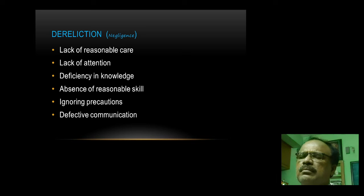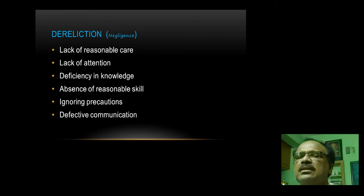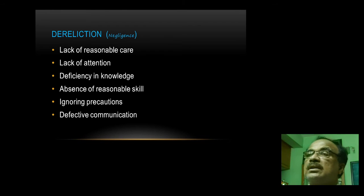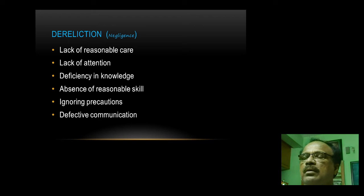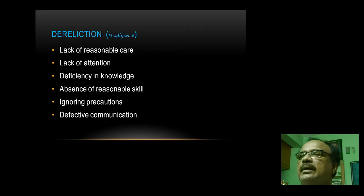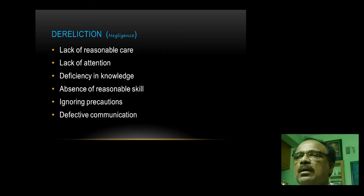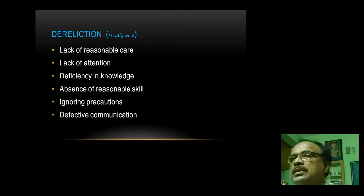The second D is dereliction — this is negligence. It is a lack of reasonable care, lack of attention toward the patient's care, not listening to their complaints, not properly taking their history, not noting what drugs they are taking, and deficiency in knowledge. Updated knowledge is necessary for a prudent doctor — updated techniques and contemporary methods of treatment. A doctor should not follow outdated techniques; he must follow updated methods of treatment or investigation to make a correct diagnosis and correct treatment in time.